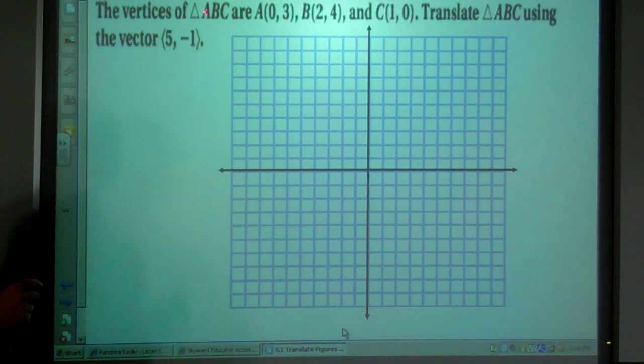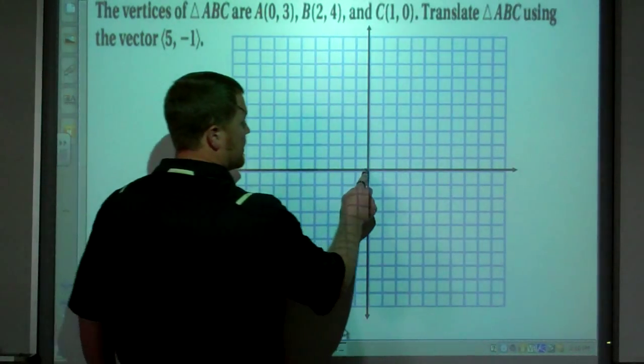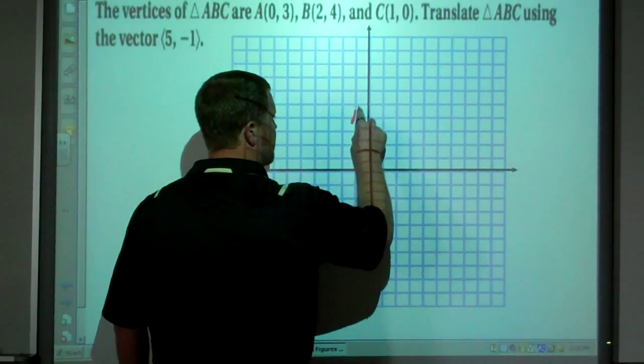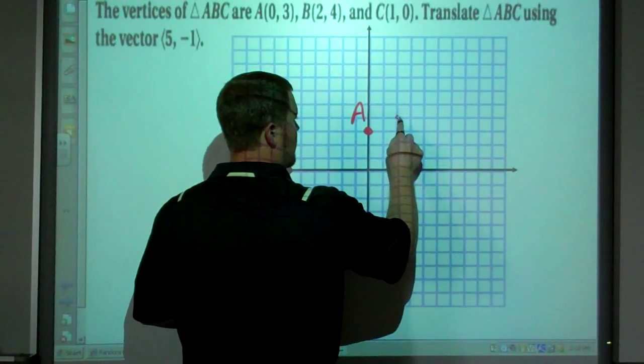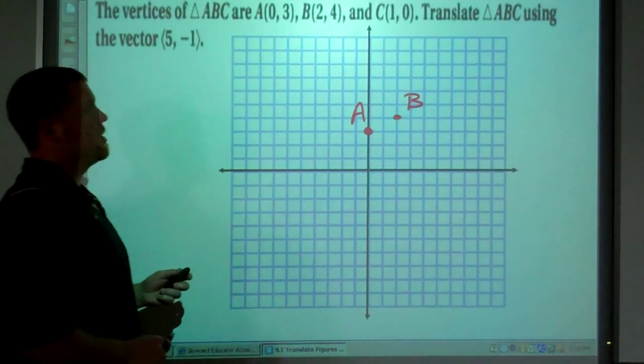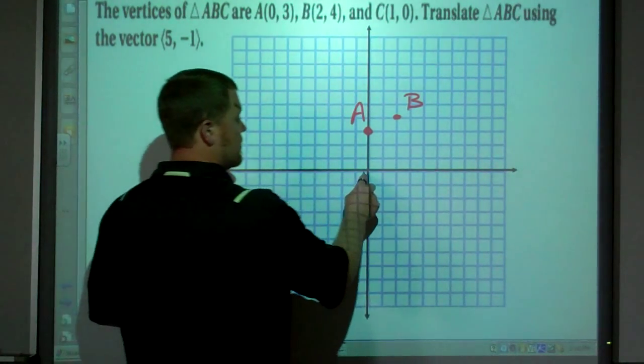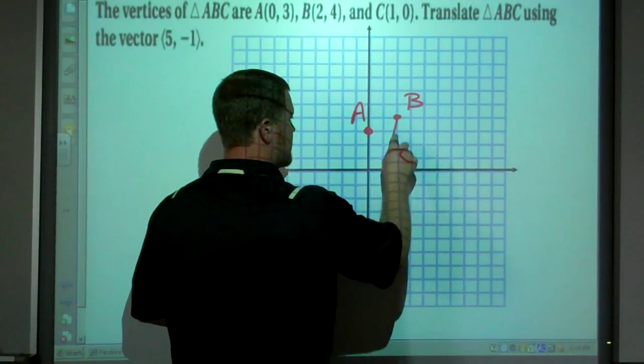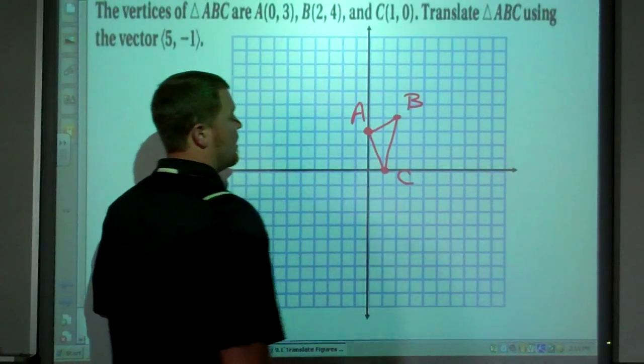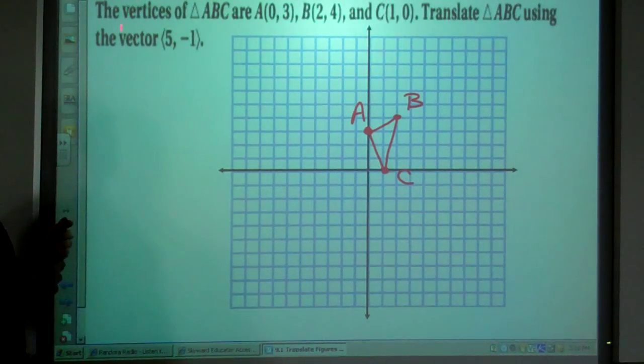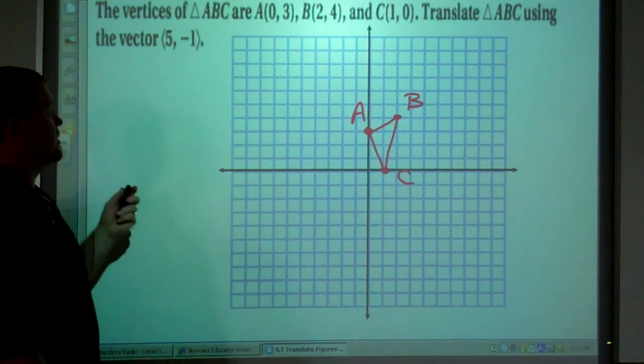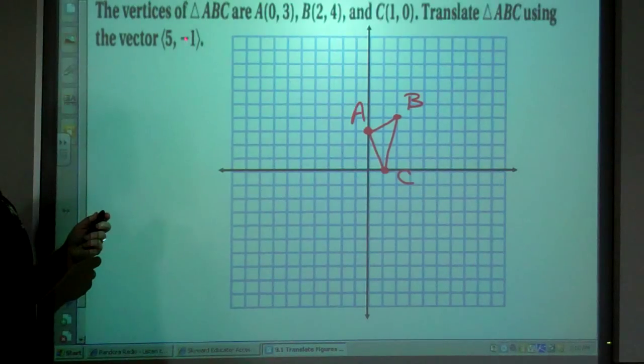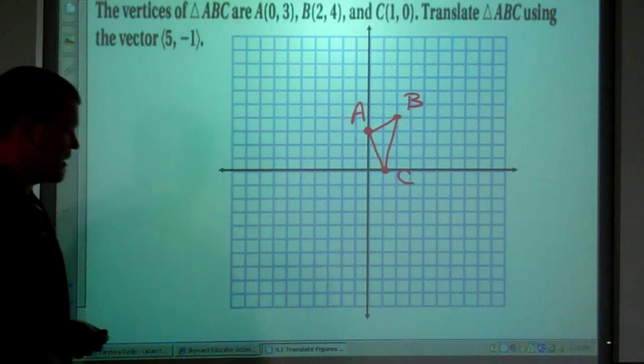The vertices of triangle ABC are zero, three. That's point A. Point B is at two, four. There's point B. And point C is at one, zero. There's point C. So we have this triangle. Now, translate triangle ABC using the vector five, negative one. So we want to move horizontally five and vertically negative one. So we're going to the right five and we're going down one for every single point.